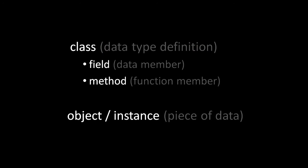What is a class? A class is simply a definition of a data type, and each class — each data type — is defined by the members which make it up. Members come in two basic kinds: fields and methods. Fields are the data members; they are the data which actually makes up the type.